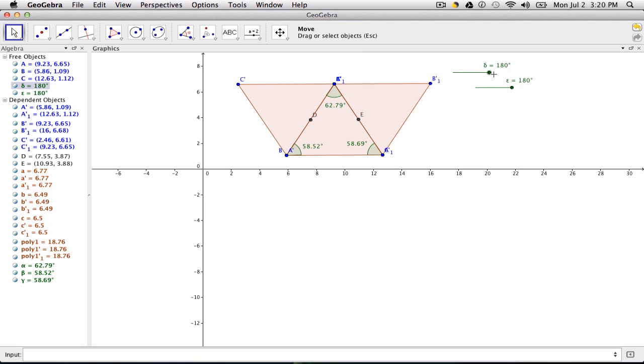And now what we hope students will see, of course, is that by rotating these two triangles, we're really moving the two angles in their original spots down here, where they were, up here in GeoGebra, to show that we have a straight line.